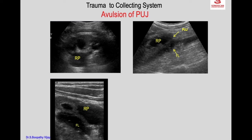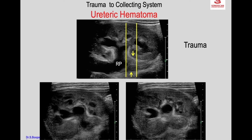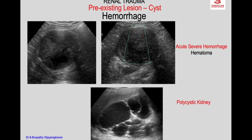There is a urinoma, and in the ureteric wall the entire lumen is obliterated by a submucosal hematoma. This can happen in trauma or it can be spontaneous. Here is an example of a polycystic kidney where one of the cysts shows mild hemorrhage seen as internal echoes.